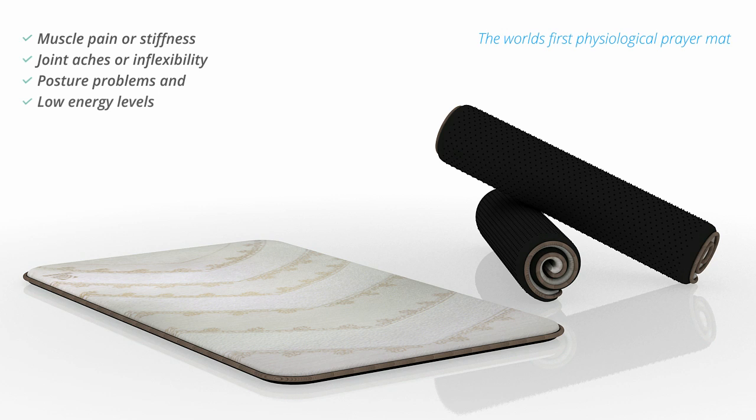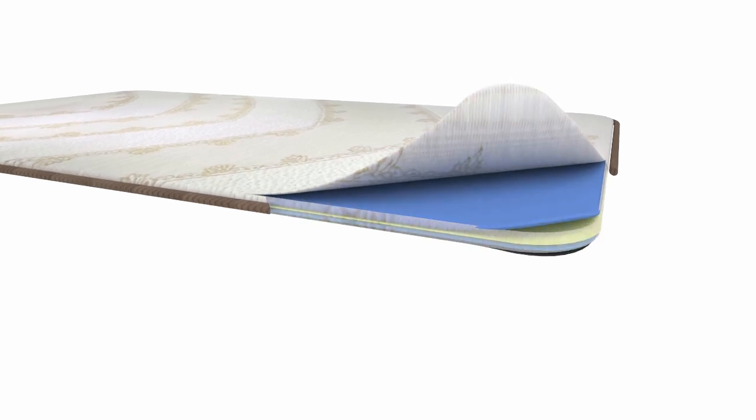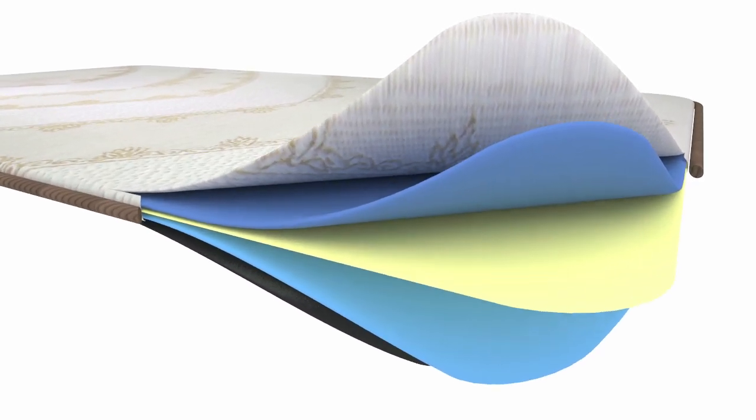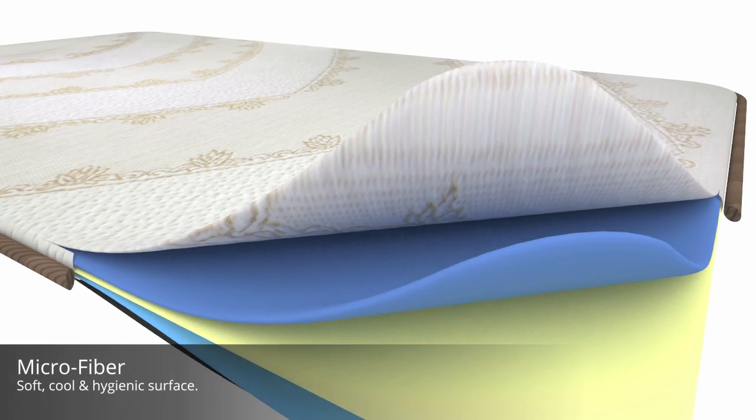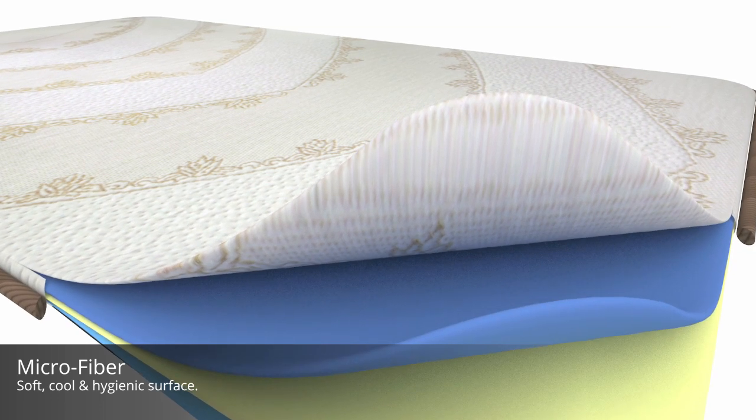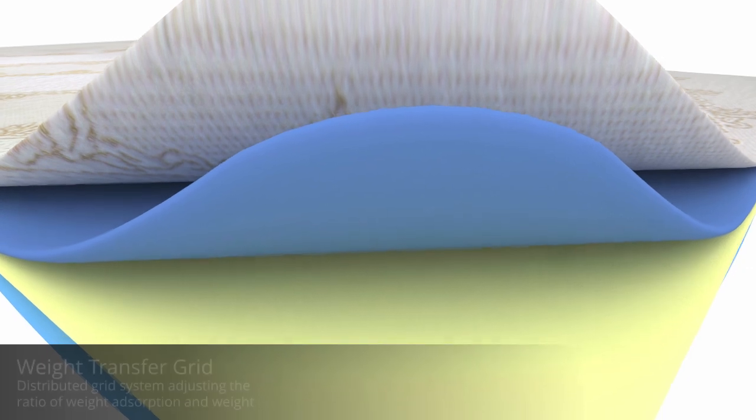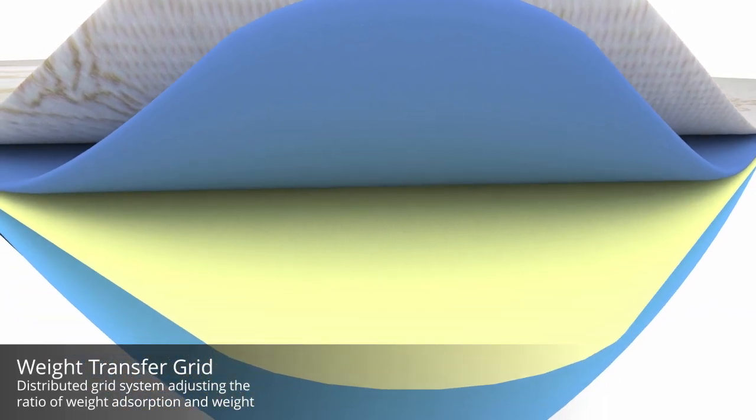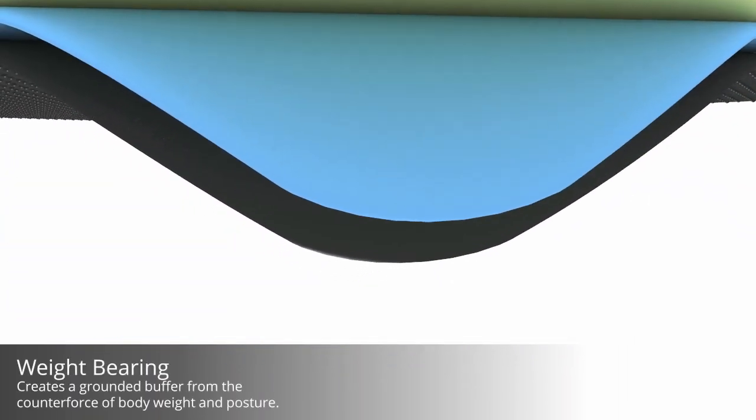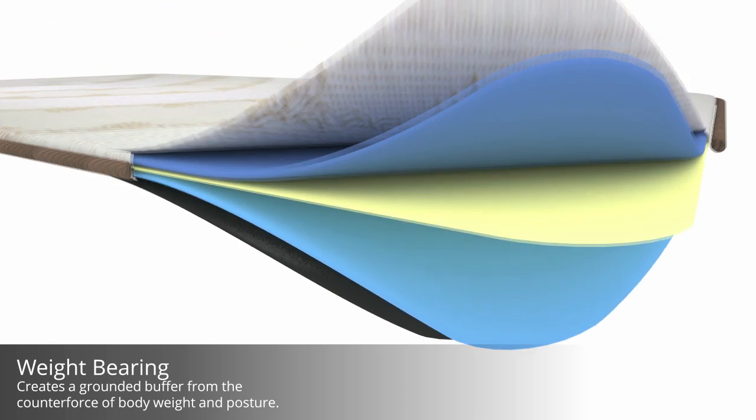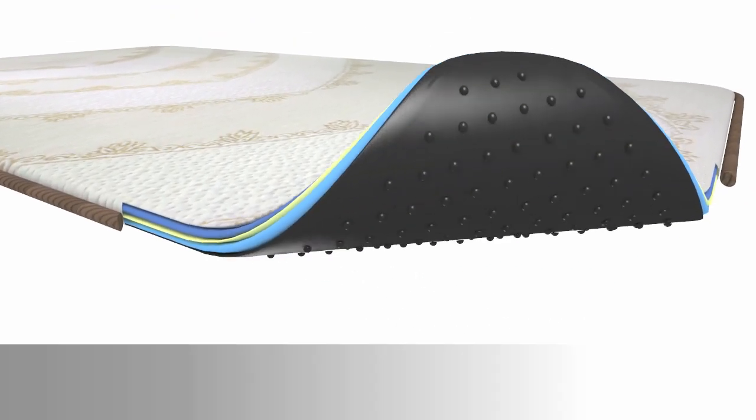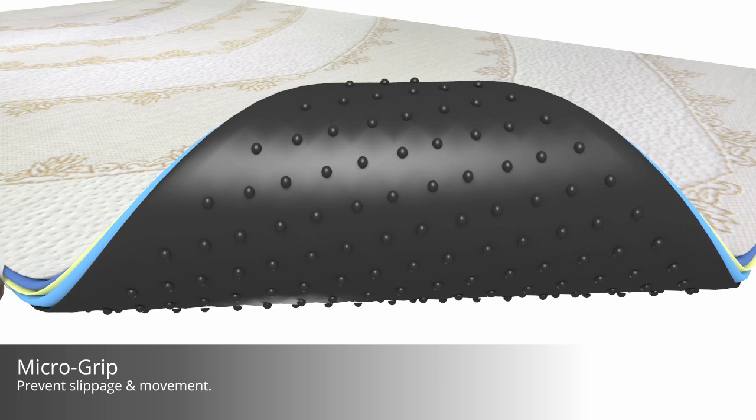All it takes is the counterforce of your body and it activates. The Times 5 prayer mat has a five-layer system: microfiber top, weight absorption, weight transfer grid, weight bearing, and micro grip designed to prevent slippage or movement while using the mat.